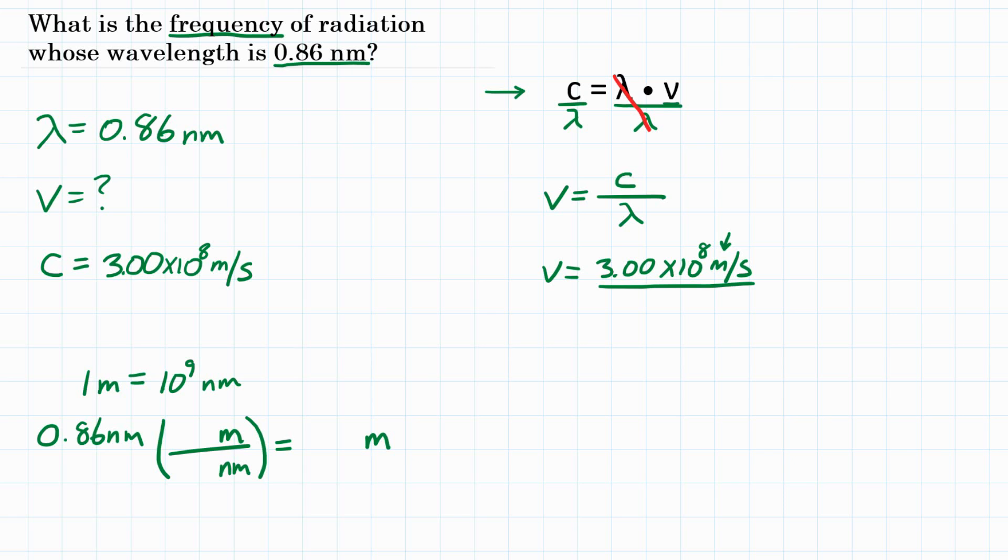So I'll input those in my conversion factor. 1 meter on top, 10 to the ninth nanometers on the bottom. Looking at my units, nanometers will cancel out because it's on top and bottom. And I will be left with what I want, which is meters.